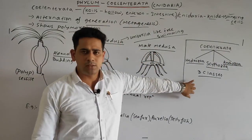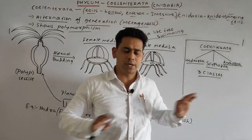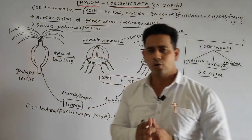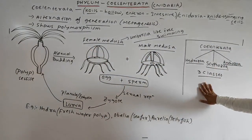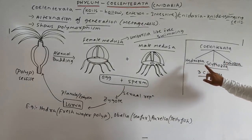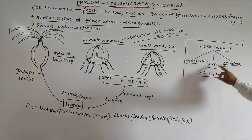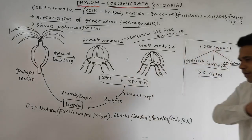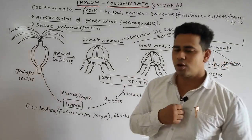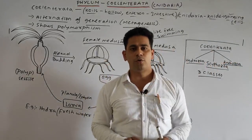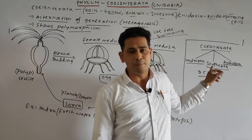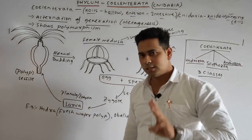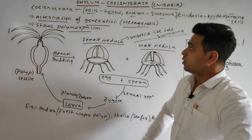Just for your knowledge, there are three classes under Coelenterata: Hydrozoa, Scyphozoa, and Anthozoa. These three classes are not in our syllabus, but just for your awareness.